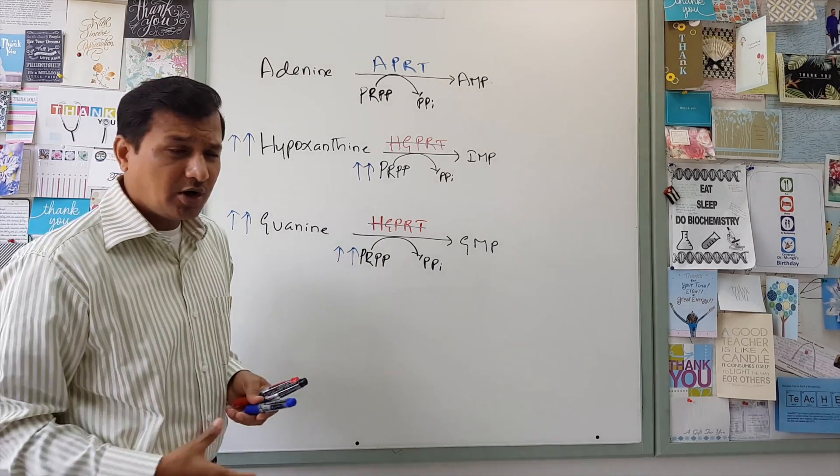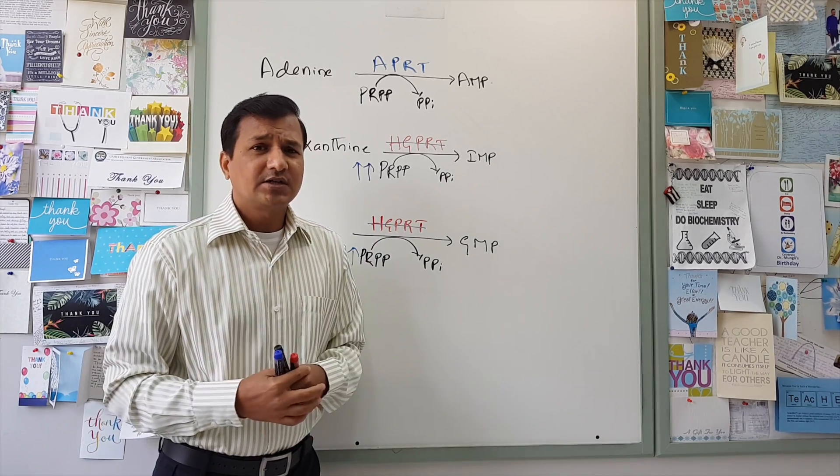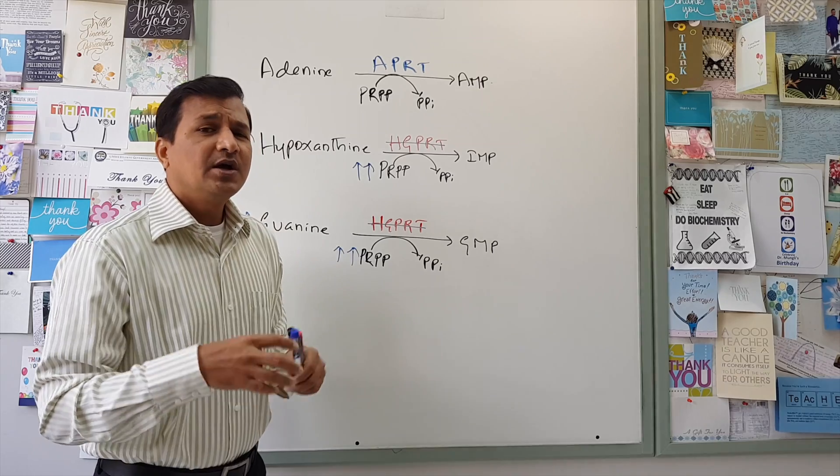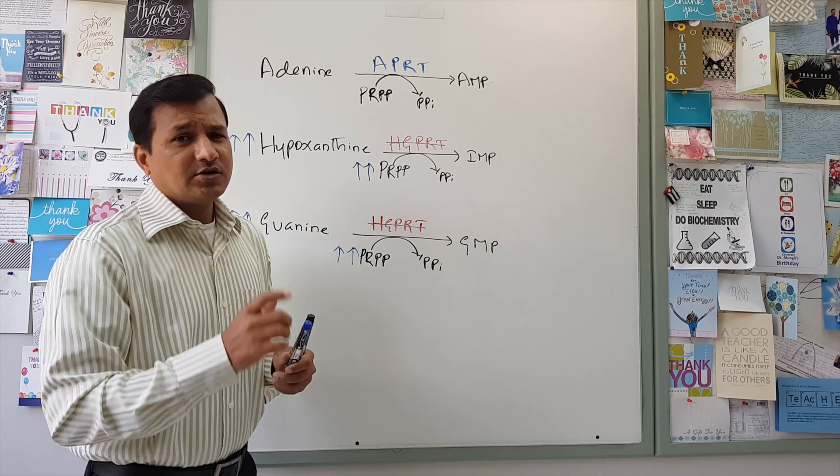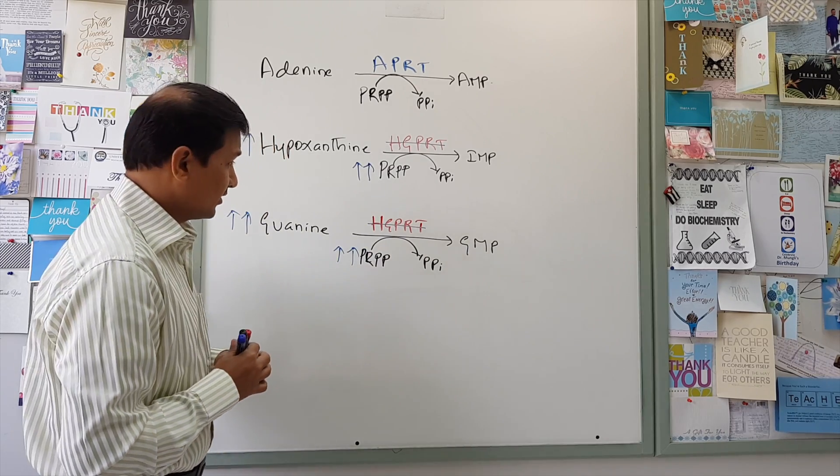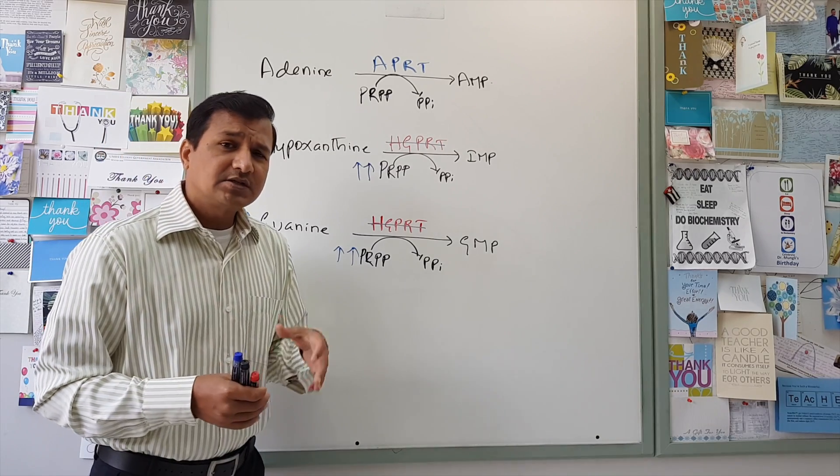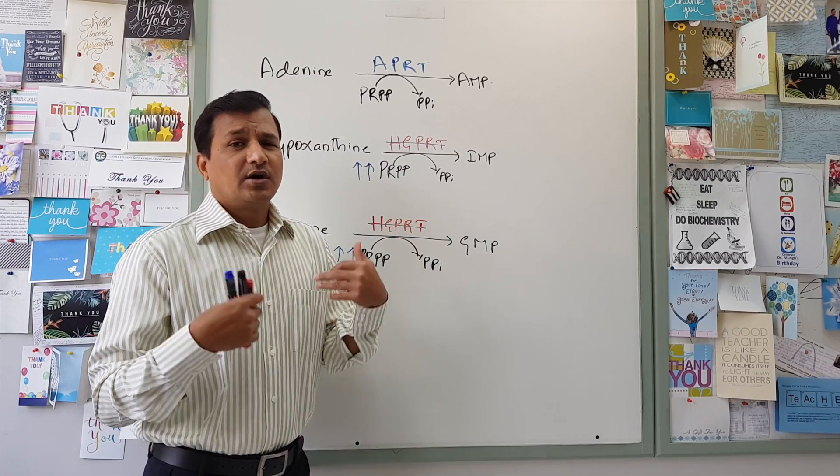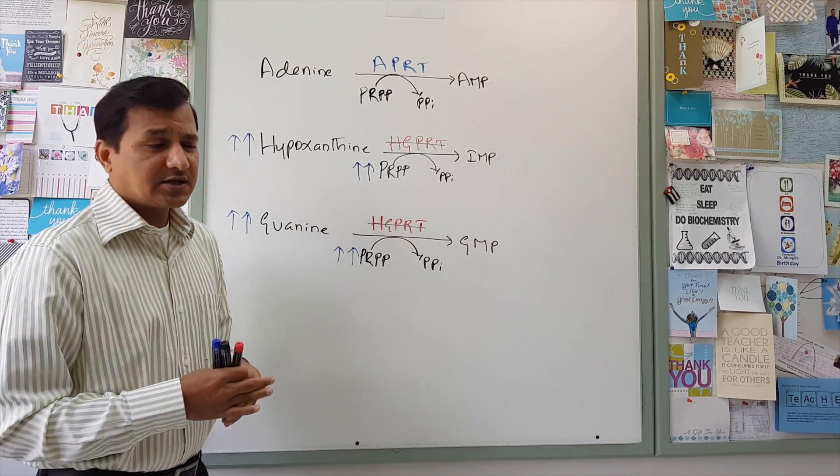So before I move on, note that HGPRT, the gene for that is located on the X chromosome. And the Lesch-Nyhan syndrome follows X-linked recessive inheritance pattern. That is one of the important things that we need to remember. And that means X-linked recessive inheritance pattern means males are the ones who are manifesting the signs and symptoms, and the females usually act as carriers.